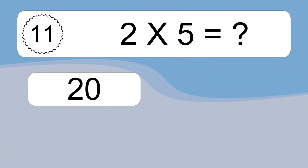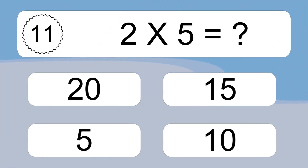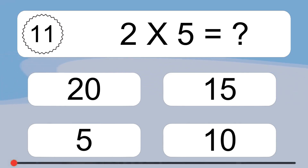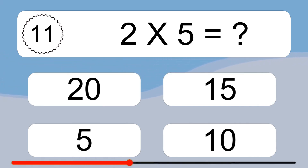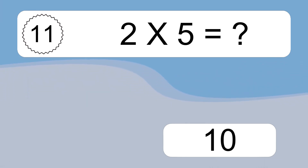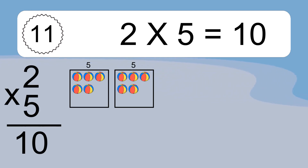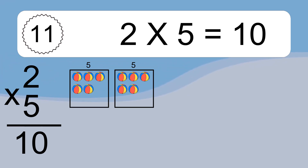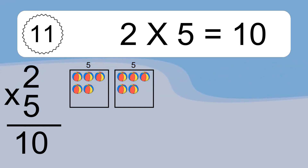Two times five equals 10. We have two boxes, and each box has five colorful balls inside. If you count all the balls in all the boxes together, you will have two times five balls. This equals 10 balls.